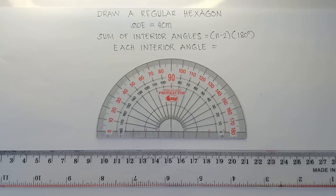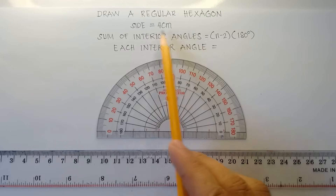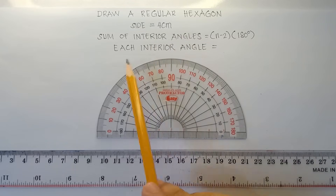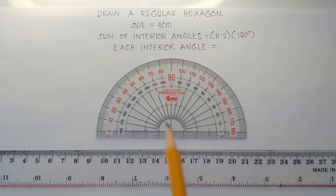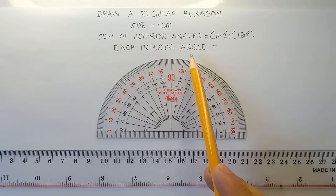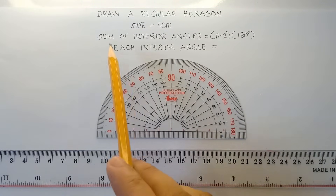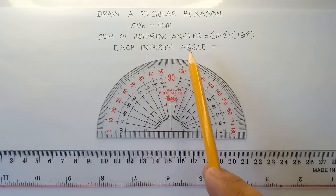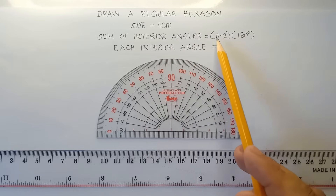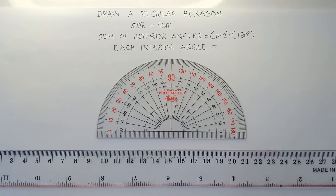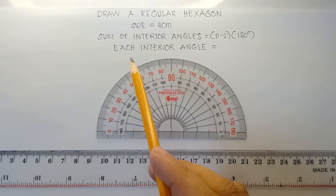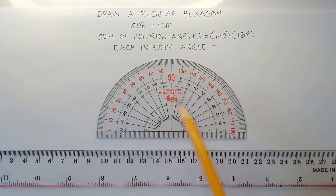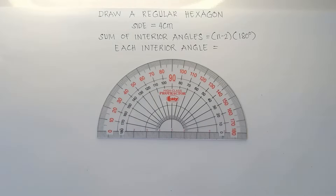Now if we talk about a regular hexagon, it has six equal sides and each interior angle must be congruent. So we have a given side of 4 centimeters, but we don't have the measure of each interior angle. So the first thing we need to do is find the measure of each interior angle before we can draw the regular hexagon.